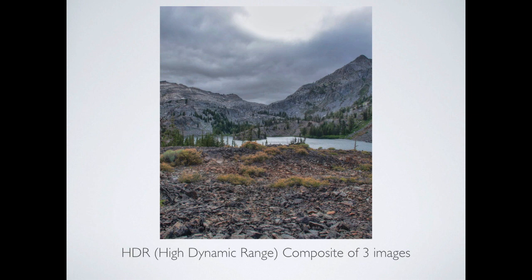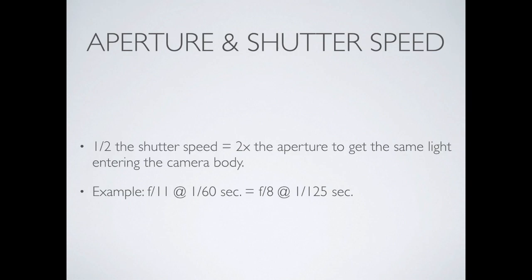Aperture and shutter speed have a relationship — they're dating. Half the shutter speed needs twice the aperture to get the same amount of light into the camera. If you have less exposure time, you need more light coming in, so the aperture needs to get bigger. It's always confusing because shutter speed is a fraction — think it through carefully.